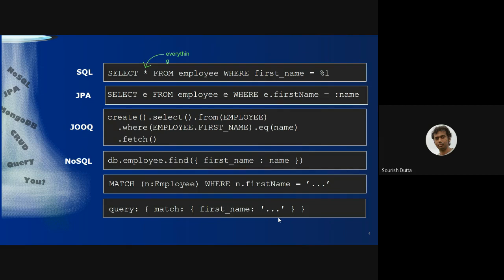JOOQ is another library that can be used. It uses a particular builder pattern with a client API to create a particular query. Here it creates a query, performs a select from a particular relation where a particular field equals a name, and then fetches. So it's similar to whatever we find in a criteria query.